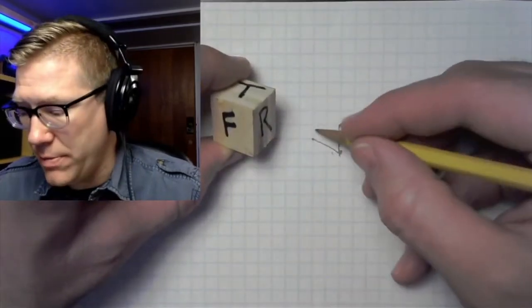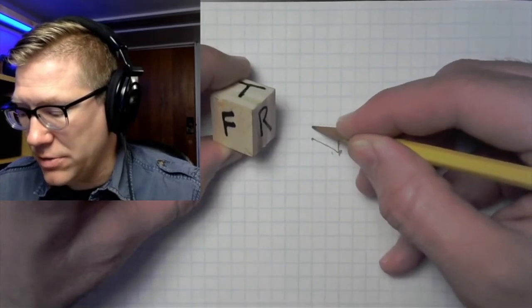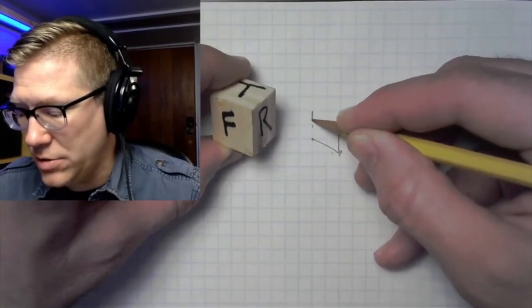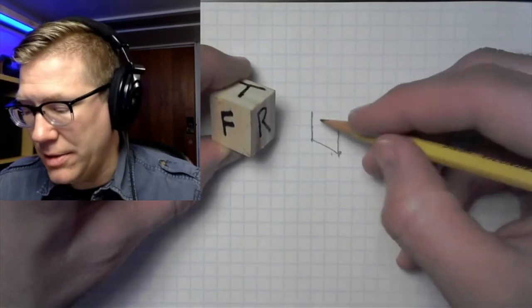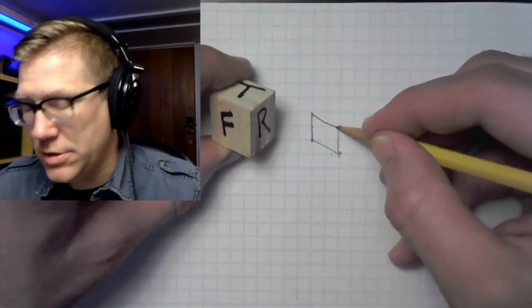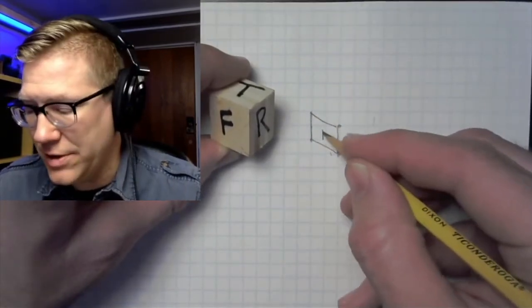Now I need to draw this line that goes up. Again, with regular graph paper, that's really easy. I can go up one, two, and draw my line there, and then I can connect those two lines together. So there's the front face of my object.